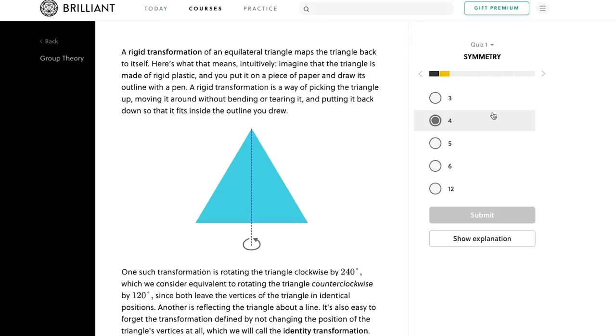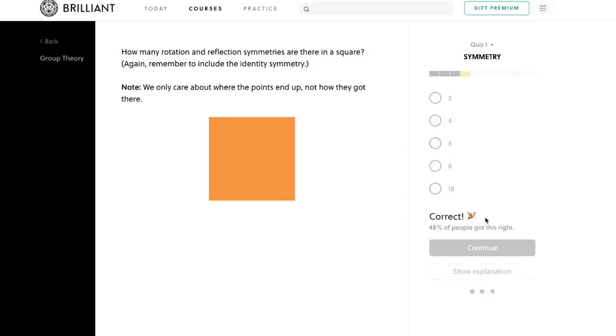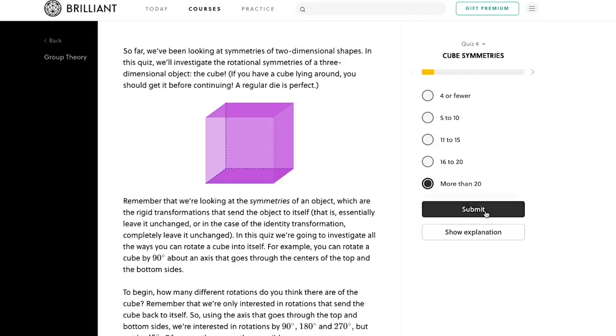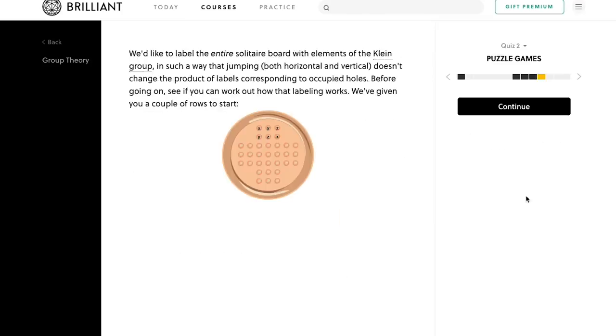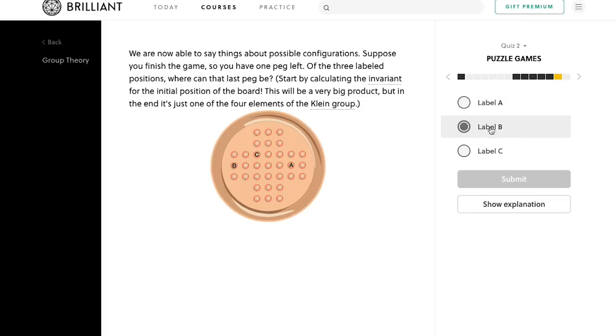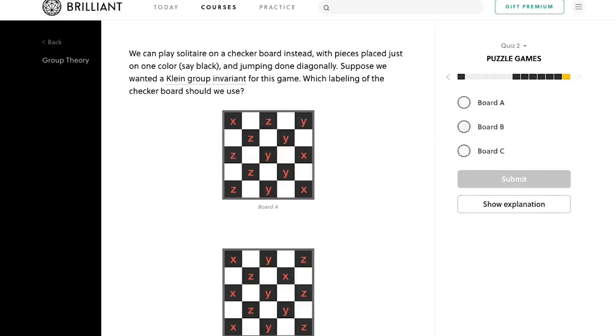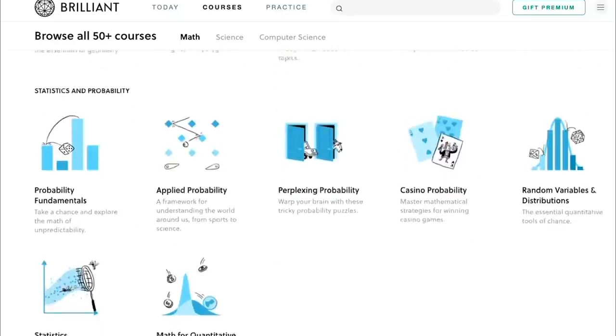So you'll learn how symmetry is defined mathematically, what a group actually is, group properties and axioms, and plenty more. The reason I like courses like this is because even though it can be very math heavy, they bring it back to what you can do with this technical knowledge and how it applies to the real world, sometimes in very unique ways. And as I always say, I really value the visualizations and animations that allow you to gain that deeper understanding. So whether you want to learn something new or brush up on old topics, Brilliant has dozens of courses in math, science, and engineering for you to choose from.